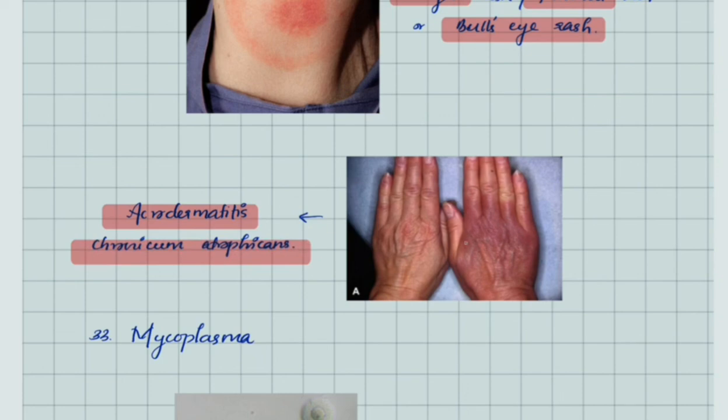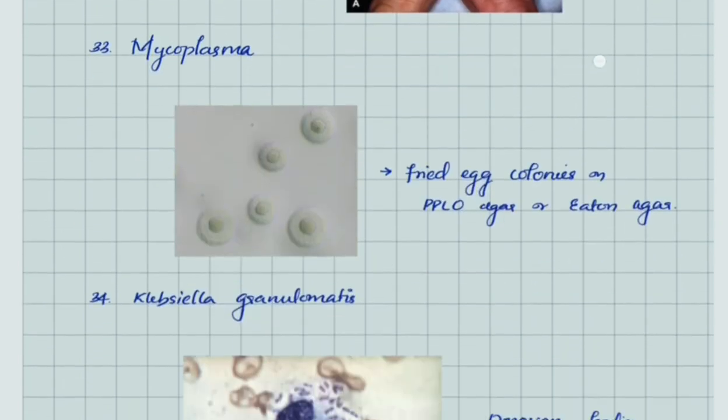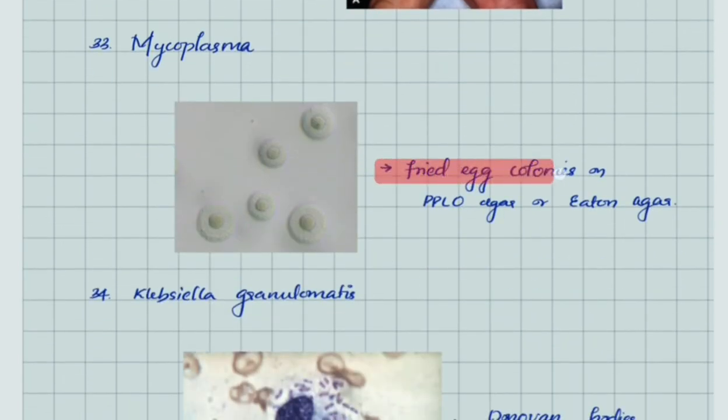Mycoplasma shows fried egg colonies on PPLO agar or Eaton agar.